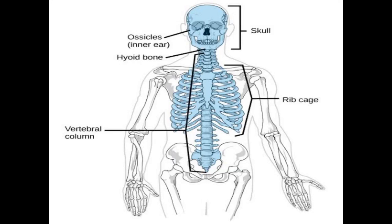The vertebral column has a total of 33 bones. These bones are irregular in shape. The function of the vertebral column is to protect the spinal cord.